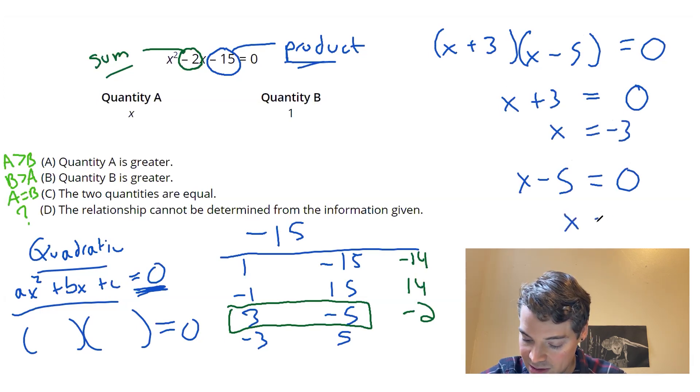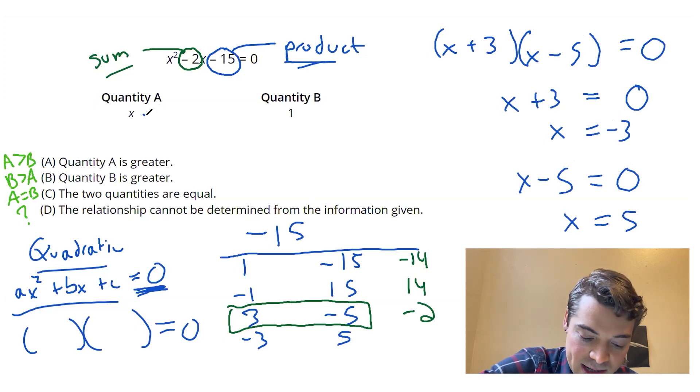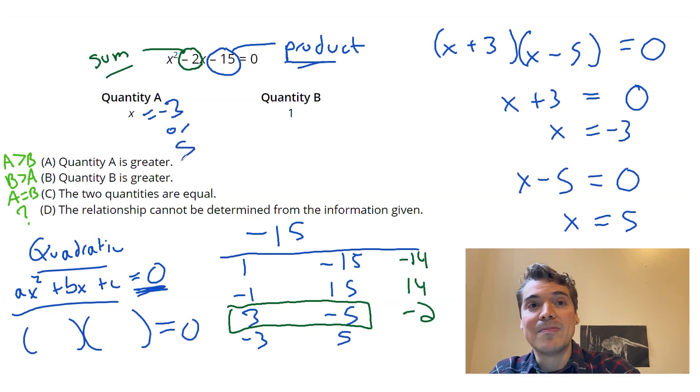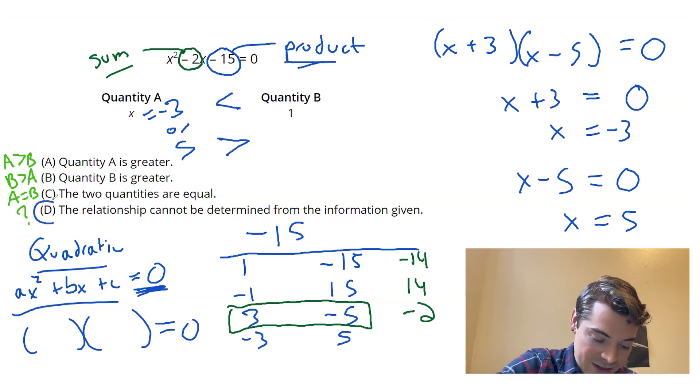So looking at quantity A over here, again, that's three, negative three, or positive five. When I compare that to quantity B, it's either going to be the case that B is bigger or A is bigger. So I've got more than one possible relationship. So my answer has to be D. It cannot be determined from the information given.